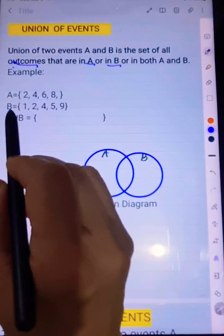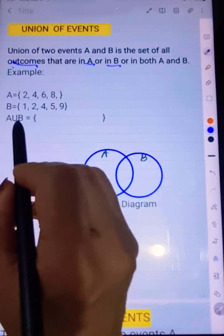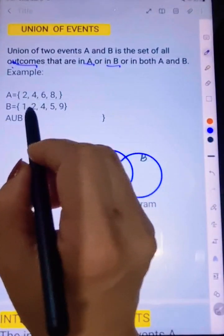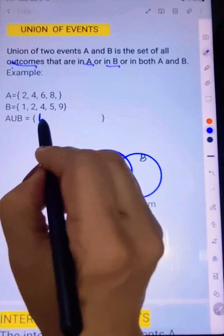Now, for here A, and then we have here B, so A union B, so simply start listing. You can arrange, start with 1.